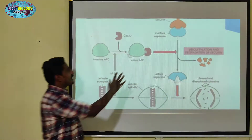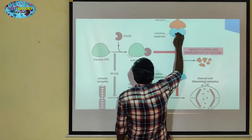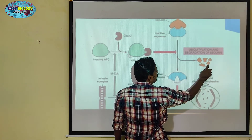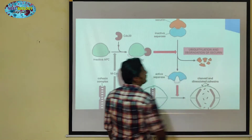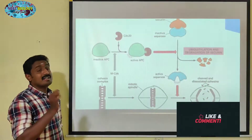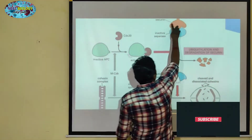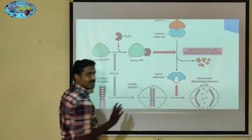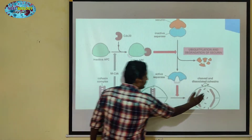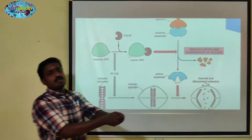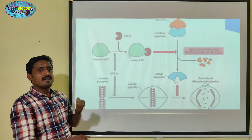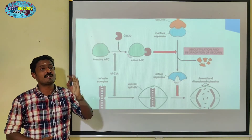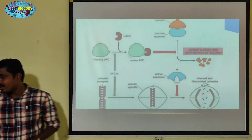Once APC is active, it targets the Separase-Securin complex. It breaks the Separase-Securin complex. This releases Separase, which then breaks down the cohesin protein, allowing chromosomes to be pulled toward opposite poles by spindle fibers.